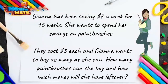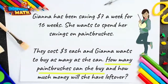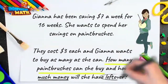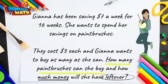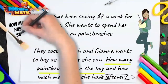We need to know how many paintbrushes she can get, which requires us to divide her savings into groups. We also need to know what is left over, which is our remainder when we divide. But first, we have to find out how much money she has saved in total.